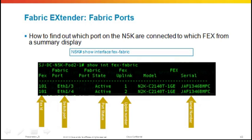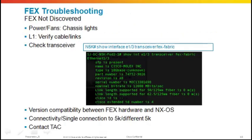To find mismatched messages on FEXes, use 'show interface fex-fabric' to see physical fabric ports connected to the FEX and their serial numbers. For troubleshooting: if the FEX is not discovered, check power, fans, chassis lights, layer 1 cables, and transceivers. Also verify hardware-to-NX-OS compatibility — if running 2200 FEXes, ensure you're on at least 4.2 code on the 5K. Try a single connection to the 5K and eliminate other uplinks. If still unresolved, contact the TAC.